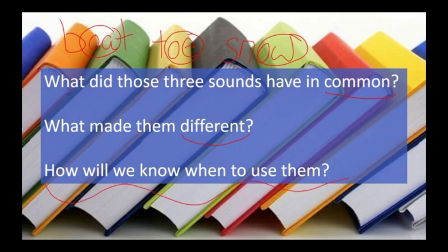What did all the sounds have in common? When I look at boat, I'm looking at the O sound. In tow, I see an O. And in snow, I hear an O sound. So all of these have the long O vowel sound. What makes the sounds different is that, even though they sound the same, their appearance is different. One has an A, one has an E, and one has a W.